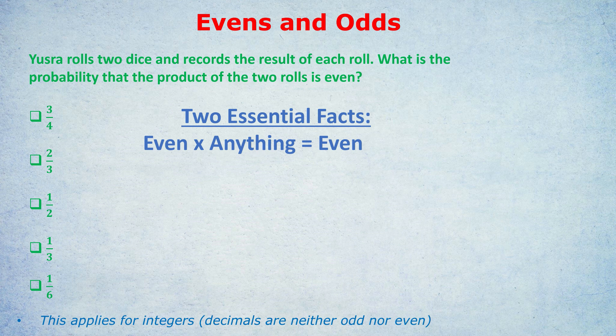The second essential fact is that the only way to get an odd product when we're talking about integers is odd times odd — or odd times odd times odd. If everything is odd, the product will be odd.